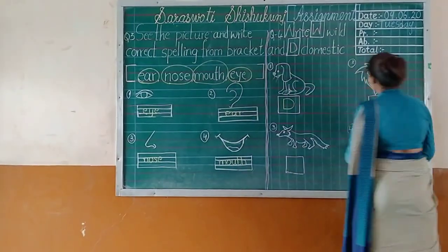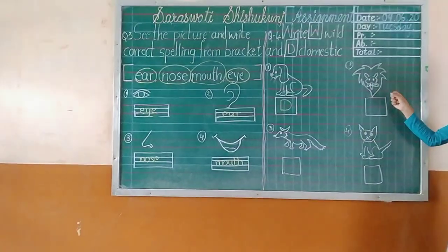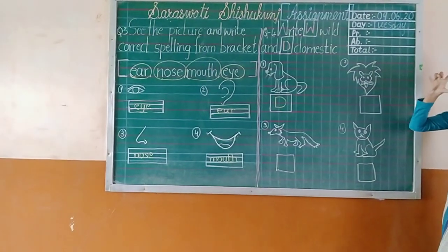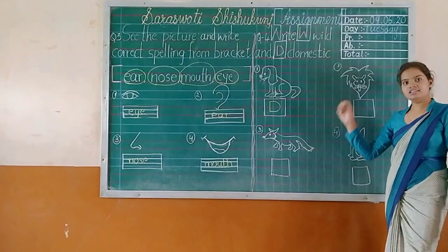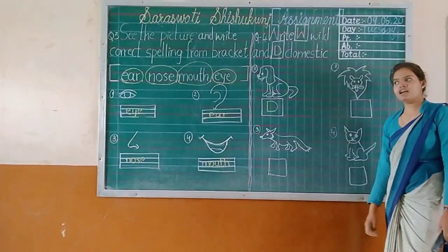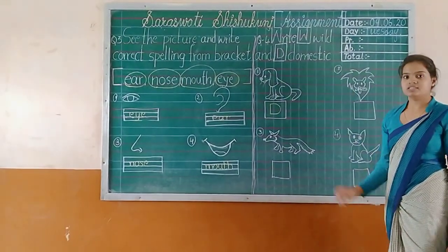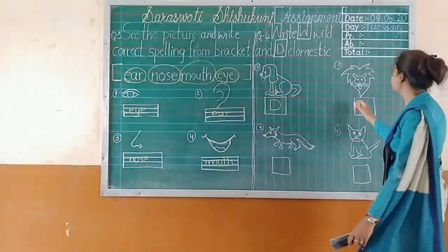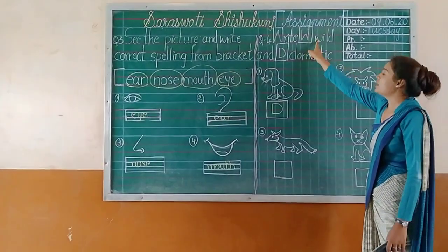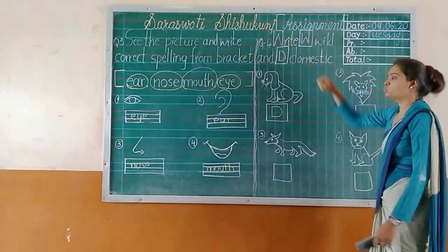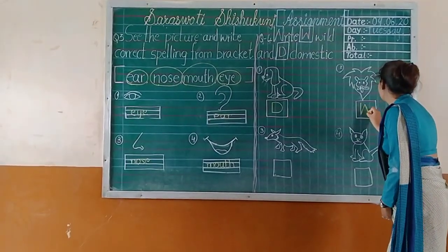Next, the second one — which animal is it? Look at the face of the animal. It is a lion. Is a lion a domestic or wild animal? Wild animal — it lives in the forest. So what do we have to write? Write capital W.